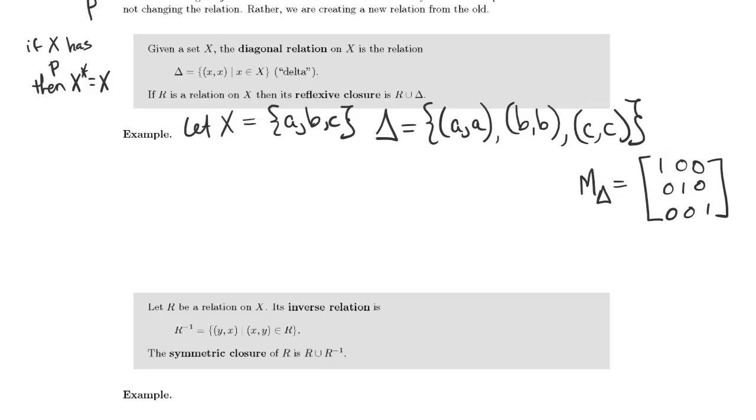So let's let R be the relation AA, AB, AC, BB, and CA. We can see that R is not already reflexive. Even though it contains the pair BB, it doesn't contain the pairs AA or CC.